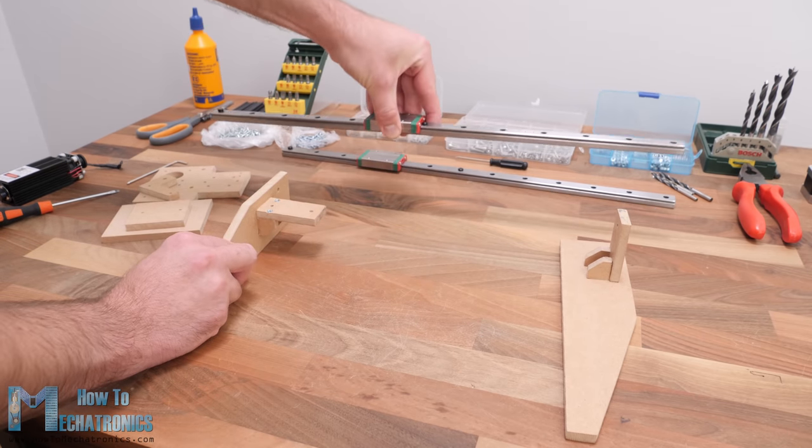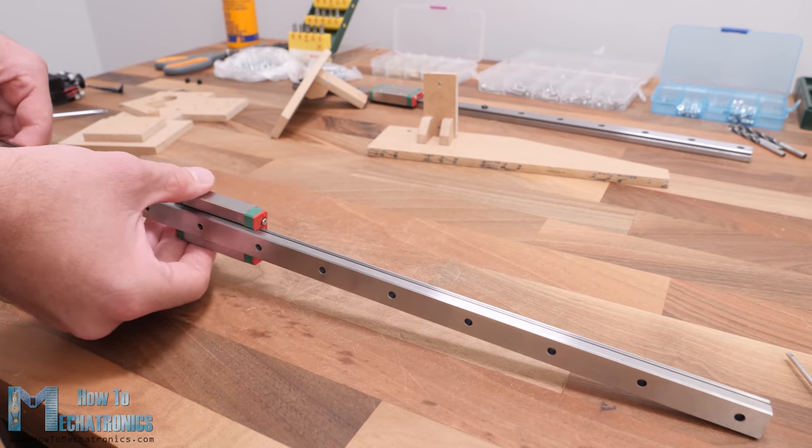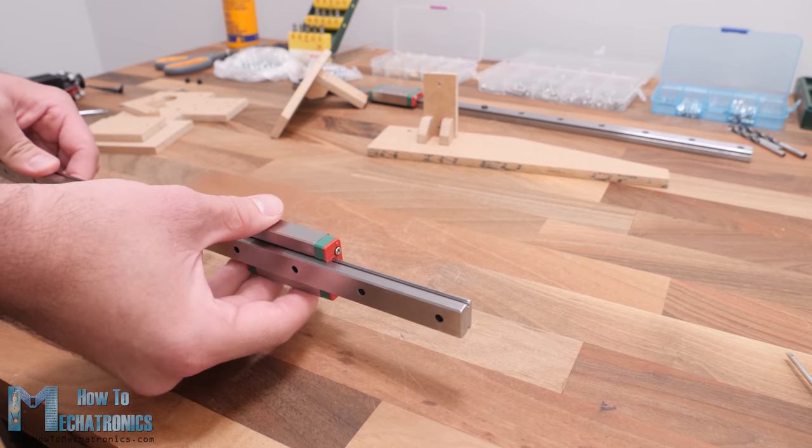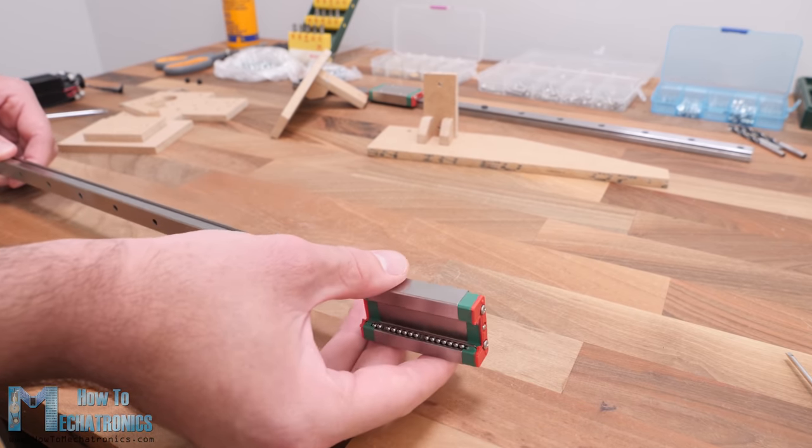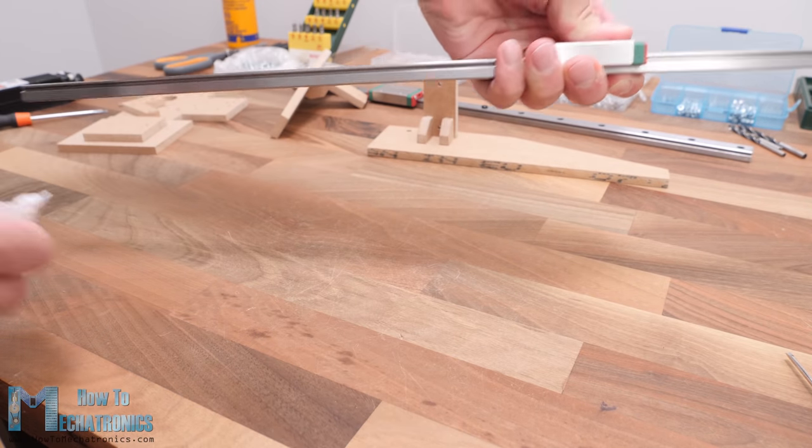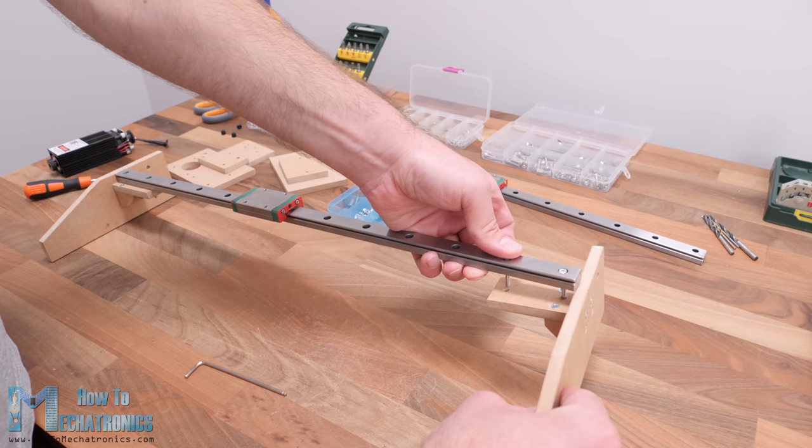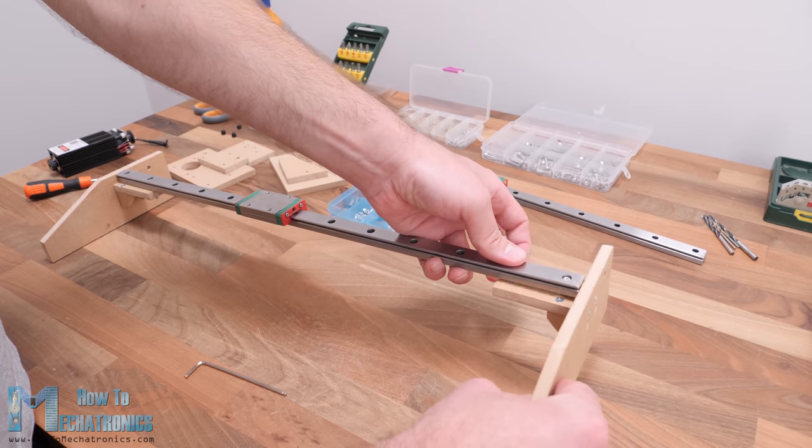Nevertheless, once I had the two sides ready, I installed the X axis rail to them. These MGN 15H rails provide very smooth and play free movement, as their sliding blocks have balls or rollers inside them. Before installing them though, we should clean and grease them well. I secured the linear rail in place with two M3 bolts on each side.